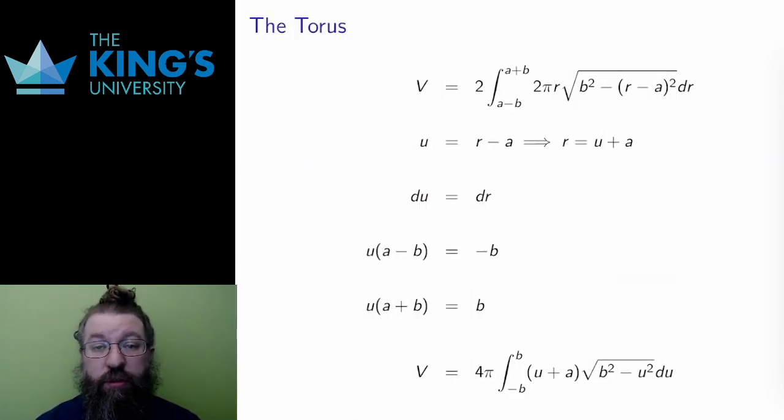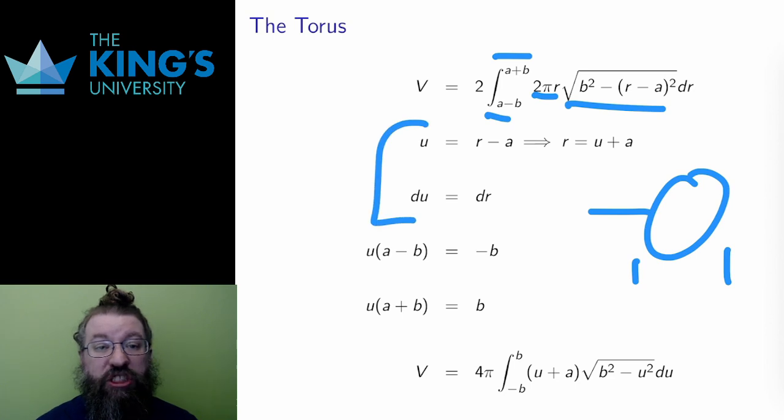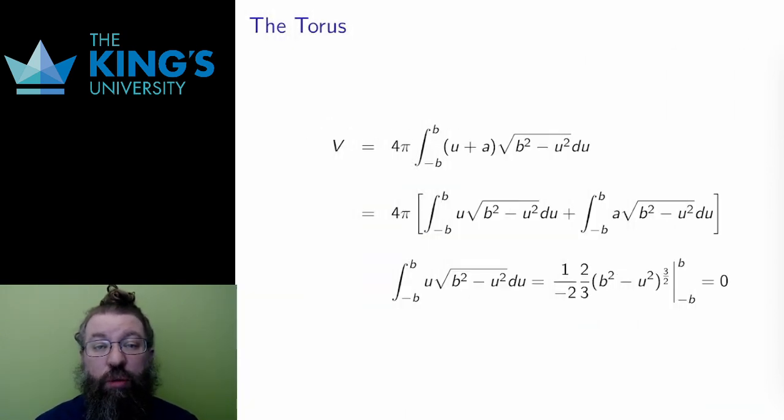This lets me set up the integral. The bounds are a - b to a + b. a is the middle of the ring, so a - b is the inside of the ring, and a + b is the outside of the ring. I'll take 2πr times the height. This is an integral that needs a substitution as well. u = r - a helps. I change the bound and I get the new integral out of the substitution. After this substitution, I can split up the u + a, and then use linearity to make two integrals.